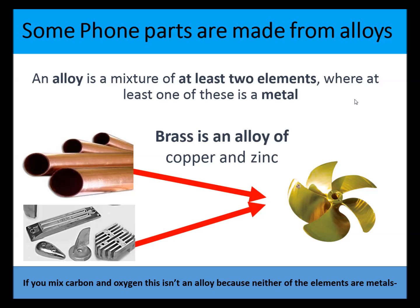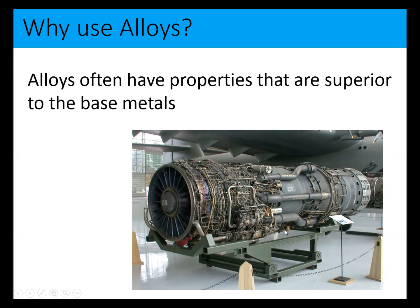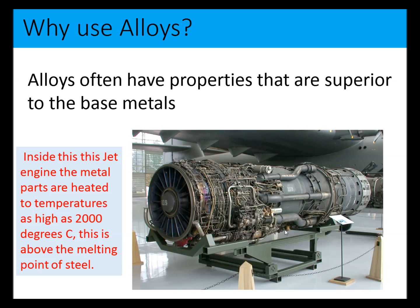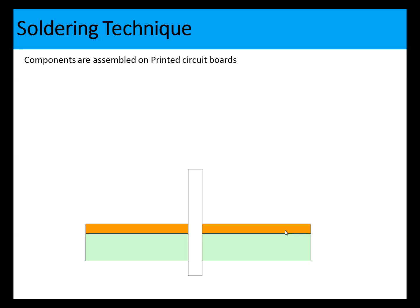Some phone parts are made from alloys. An alloy is a mixture of at least two elements, at least one of which is a metal. For example, brass is an alloy of copper and zinc. Alloys are used because they have properties superior to base metals - they may cast better or withstand higher temperatures. For phone cases, alloys provide good castability.